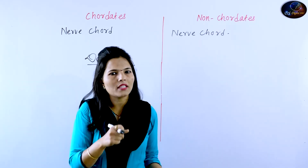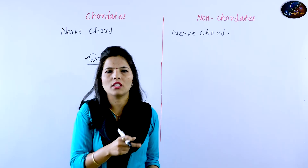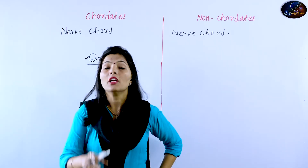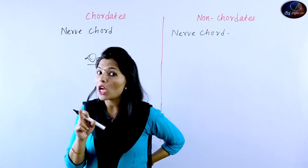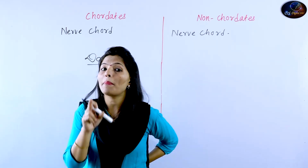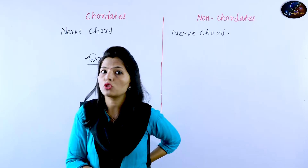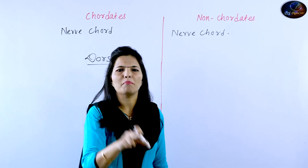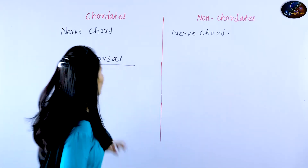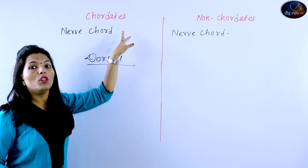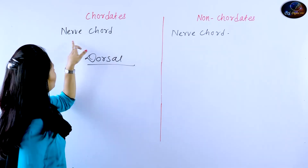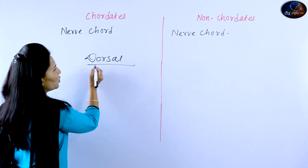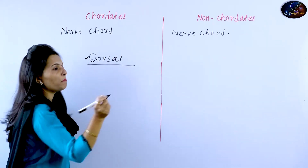So is it our dorsal side? We have our whole body, and the other side is the dorsal side. The nerve form of the chordates is present on the dorsal side.